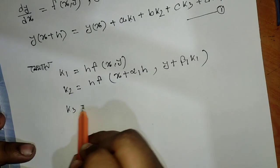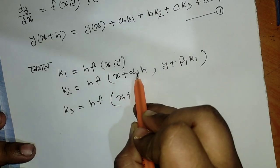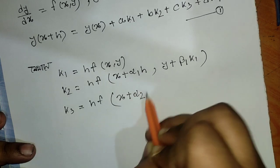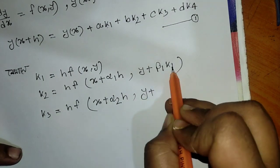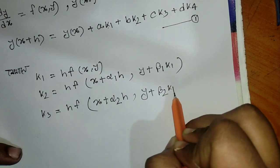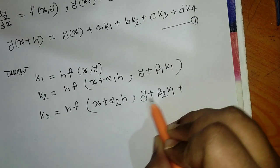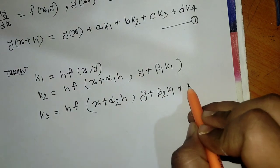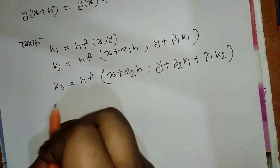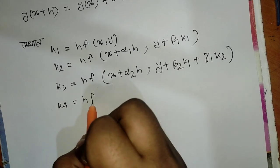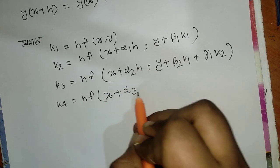k3 is f of x plus alpha2·h comma y plus beta2·k1 plus gamma2·k2.